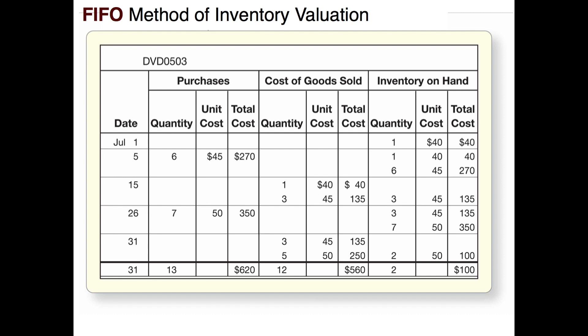Then on July the 26th we made another purchase — prices went up again. We bought seven items at $50 each. So now in our ending inventory we have three items left from the July 5th purchase and seven from the current purchase at $50 each — ten total items: three at $45 and seven at $50, for a total ending inventory cost of $485.